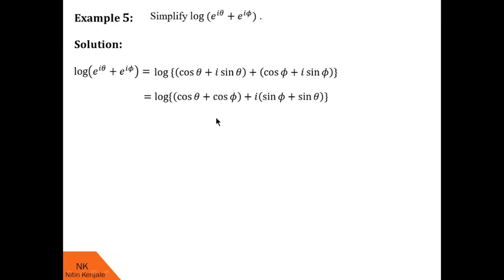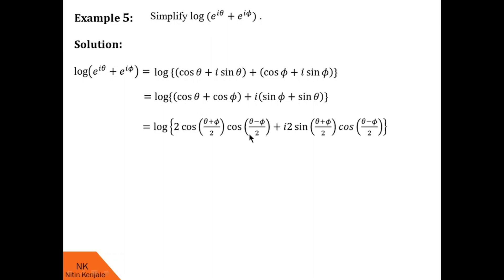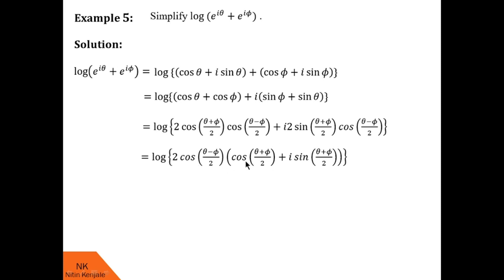Using trigonometric identities, cos theta plus cos phi can be written as 2 cos((theta+phi)/2) into cos((theta-phi)/2), and sin phi plus sin theta can be written as 2 sin((theta+phi)/2) into cos((theta-phi)/2). Here 2 cos((theta-phi)/2) is common in both terms, so taking it out, inside the bracket we have cos((theta+phi)/2) plus i sine((theta+phi)/2), which is like e raised to i(theta+phi)/2.